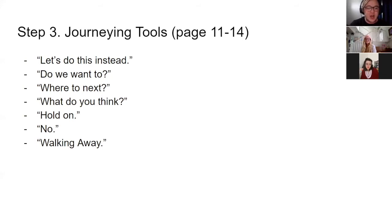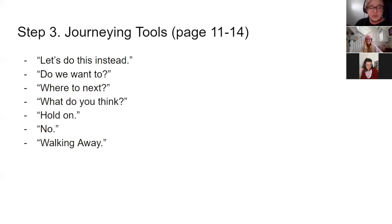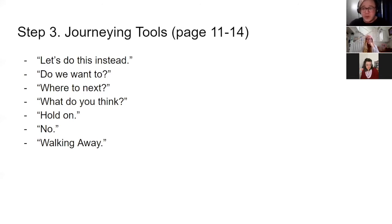We're each going to share a couple of the journeying tools that we have. One of those to begin is "let's do this instead." So anytime during our journey if we want to take a different direction - maybe we're heading toward a swamp and we're just not feeling like a swamp is the right choice - we could say, let's go to the garden instead. We could also say, "do we want to?" That's a great way to ask the others playing with us when we're about to head into uncharted territory, to constantly be asking, do we want to do this together? Do we want to go into the swamps where it might be dark and dangerous? "Where to next?"